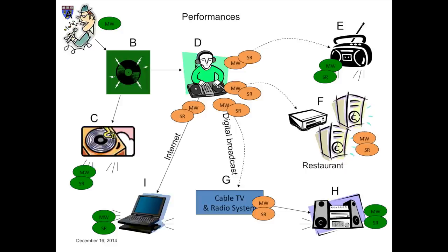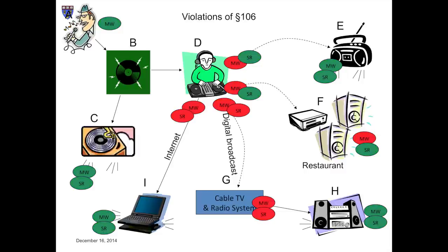The third and last step is to survey the public performances we've identified and determine if there are any grounds for exempting them from the reach of the statute. There are several possible exemptions. If the work performed is a sound recording, and if the way in which it is performed is not a digital audio transmission, then it's not covered by either §106.4 or §106.6. So all of the analog or non-transmission performances escape. For the time being, the digital audio transmissions do not.